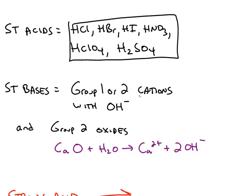So for example, sodium hydroxide, magnesium hydroxide. And you can have a group 2 cation paired up with an oxide, like calcium oxide. Because when calcium oxide is put into water, it forms calcium, but the basic part is the two hydroxides.